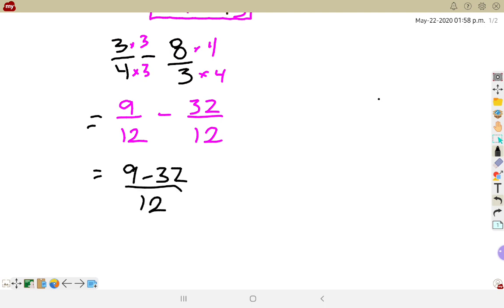Now I could change this to say 9 plus negative 32, but there's really no difference here. I can do 9 minus 32 just the same, and it gives me negative 23 over 12. And putting into mixed number, that is negative 1 and 11 over 12, because 12 can go into negative 23, negative 1 time. There'd be 11 pieces left over.